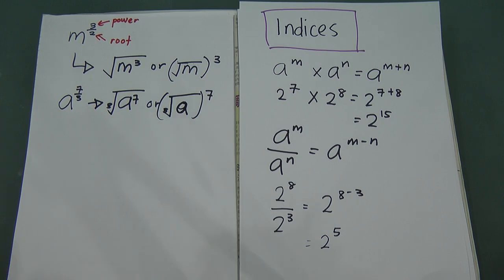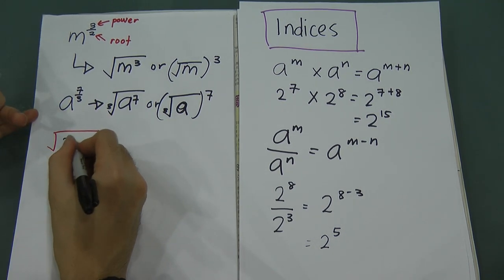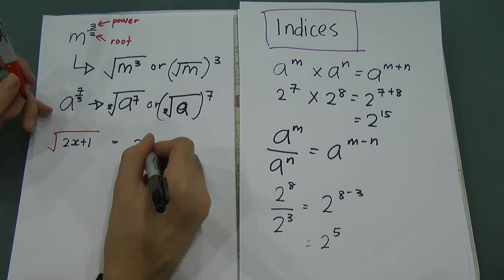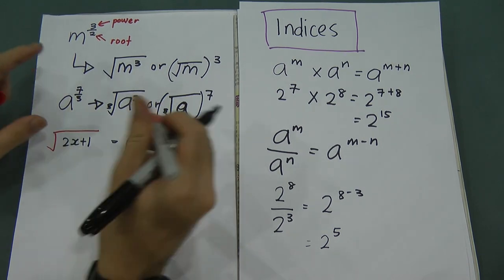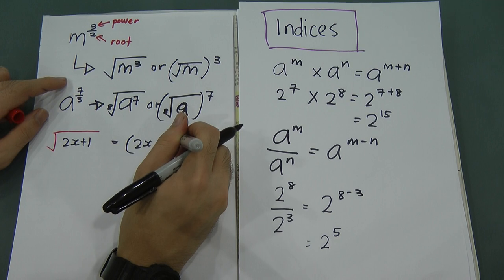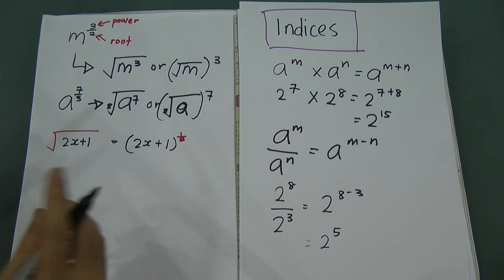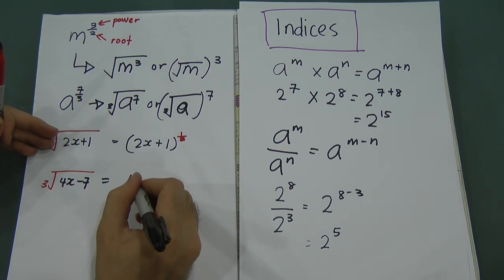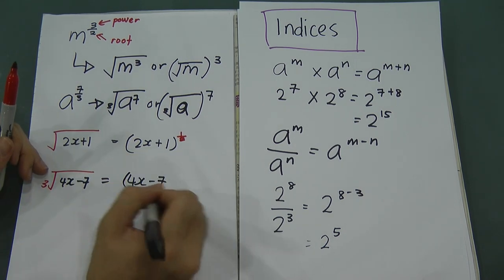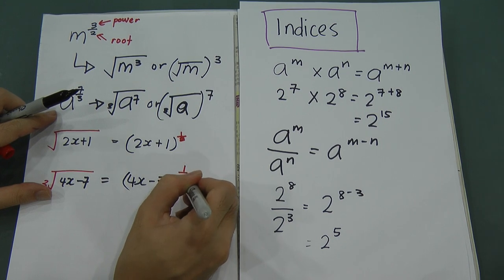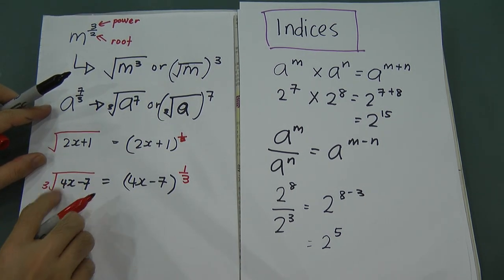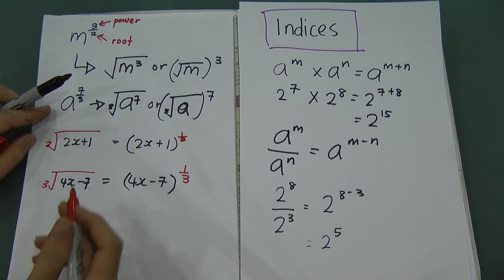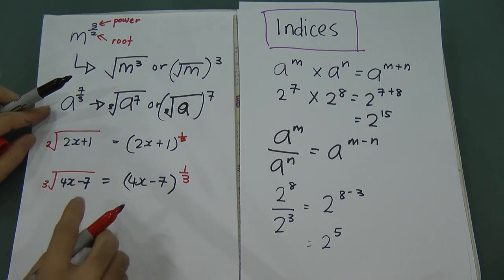Sometimes in exams you'll see expressions like the square root of (2x + 1). You can change this to (2x + 1) to the power of 1 over 2, since 1 over 2 equals square root. Similarly, the cube root of (4x minus 7) becomes (4x minus 7) to the power of 1 over 3, because cube root equals 1 over 3.